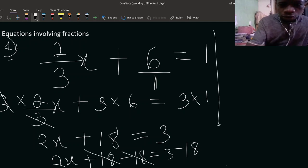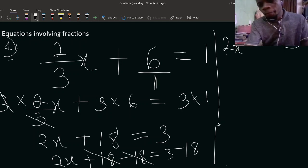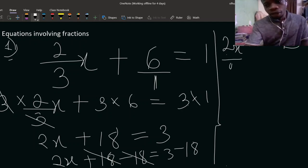So what do we have here? You are going to be having 2x equal to 3 minus 18, that's minus 15. Now you are calculating x, right? To get rid of 2, you have to divide it by 2. So having divided this by 2, you also have to divide this by 2.